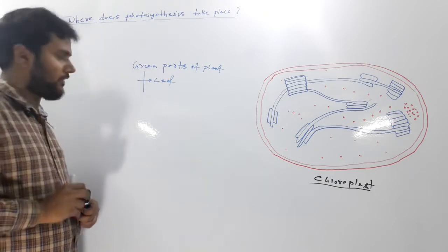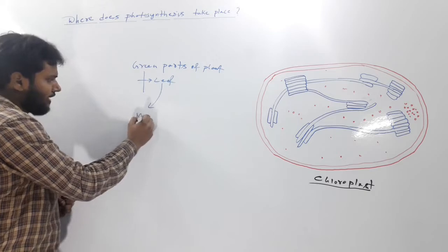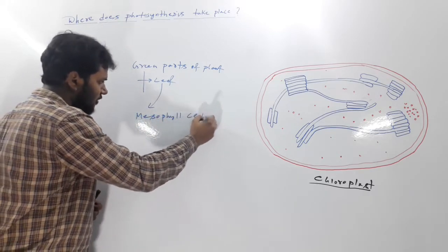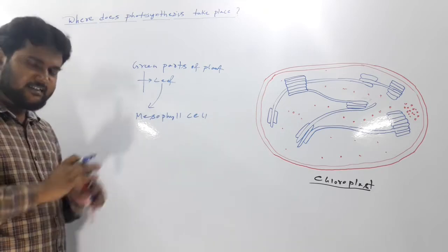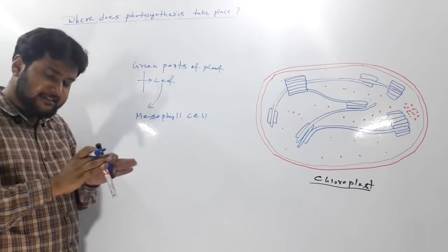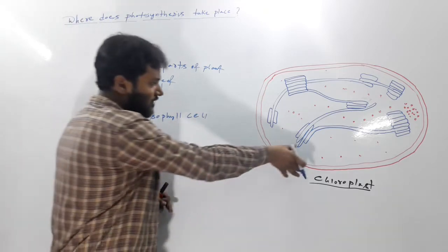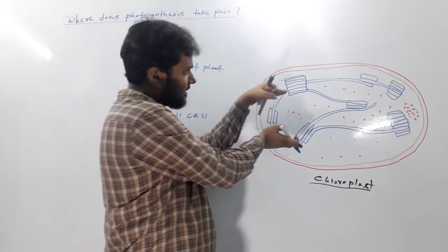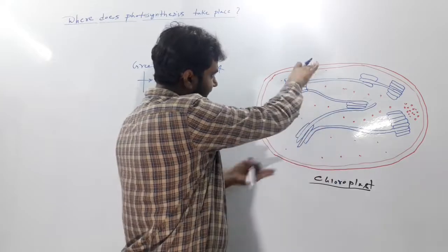It needs green parts, and in case of leaf, it is mesophyll cell where photosynthesis occurs. Inside the mesophyll cell there is a large amount of this organelle chloroplast, and this chloroplast has flattened surface.